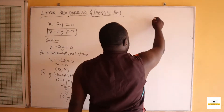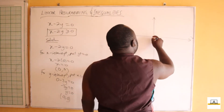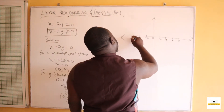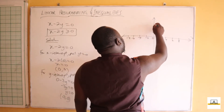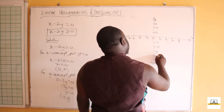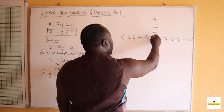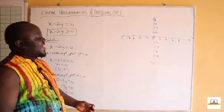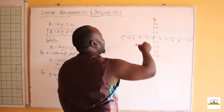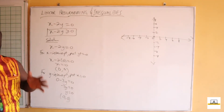We set up our xy-plane with values along both axes. We locate the point (0, 0). We can't yet draw our line because we don't know its direction — this way or that way — but all we know is that the line passes through the origin.